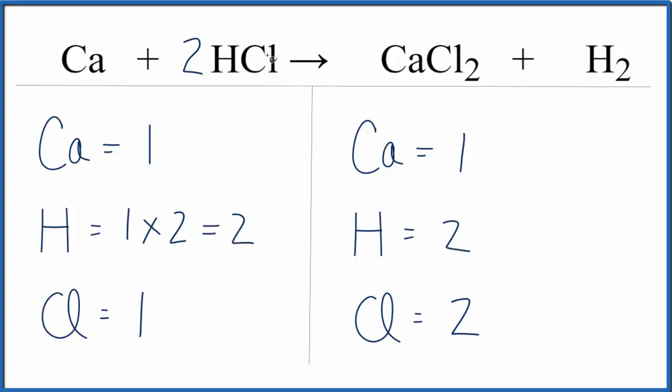But the two, it applies to everything here. So one chlorine times the two, that gives us two chlorines. And that's it. We're done balancing this equation.